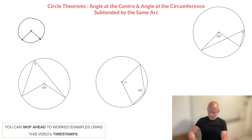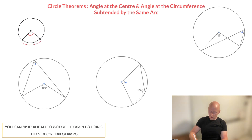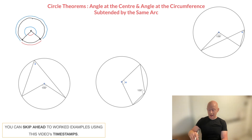This angle at the center is subtended by this arc along the circle — I'll highlight that in red. This angle at the center is subtended by this arc right here. On the other hand, this angle at the center is subtended by the longer arc right here. Recognizing the arc that is forming the angle at the center we're dealing with is really important.